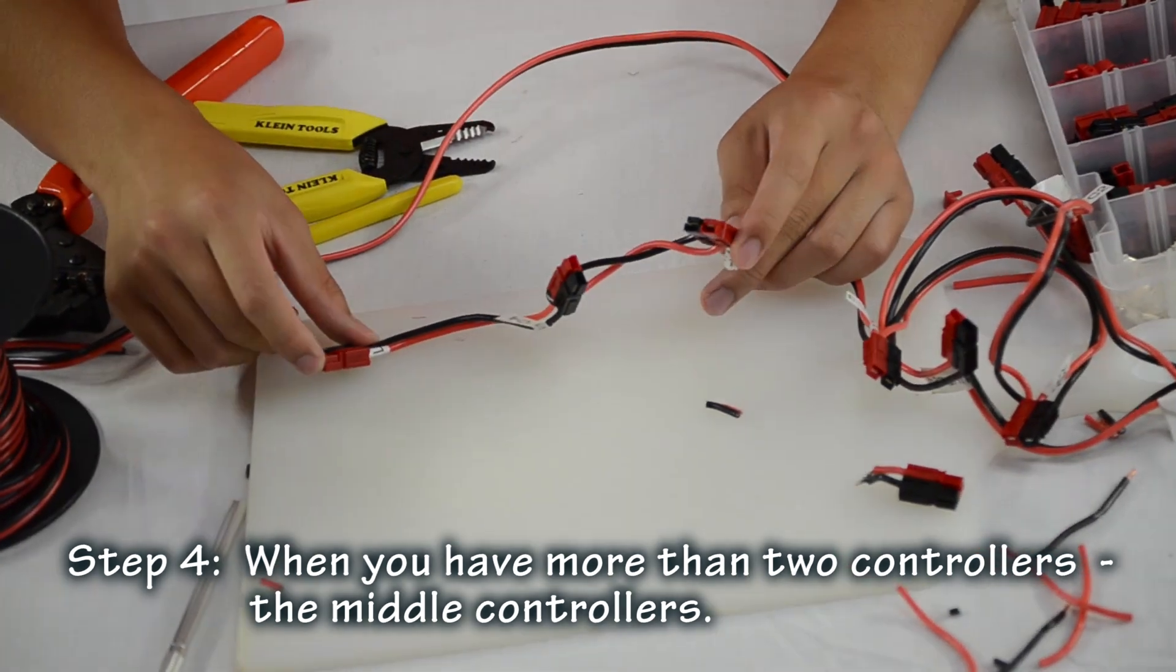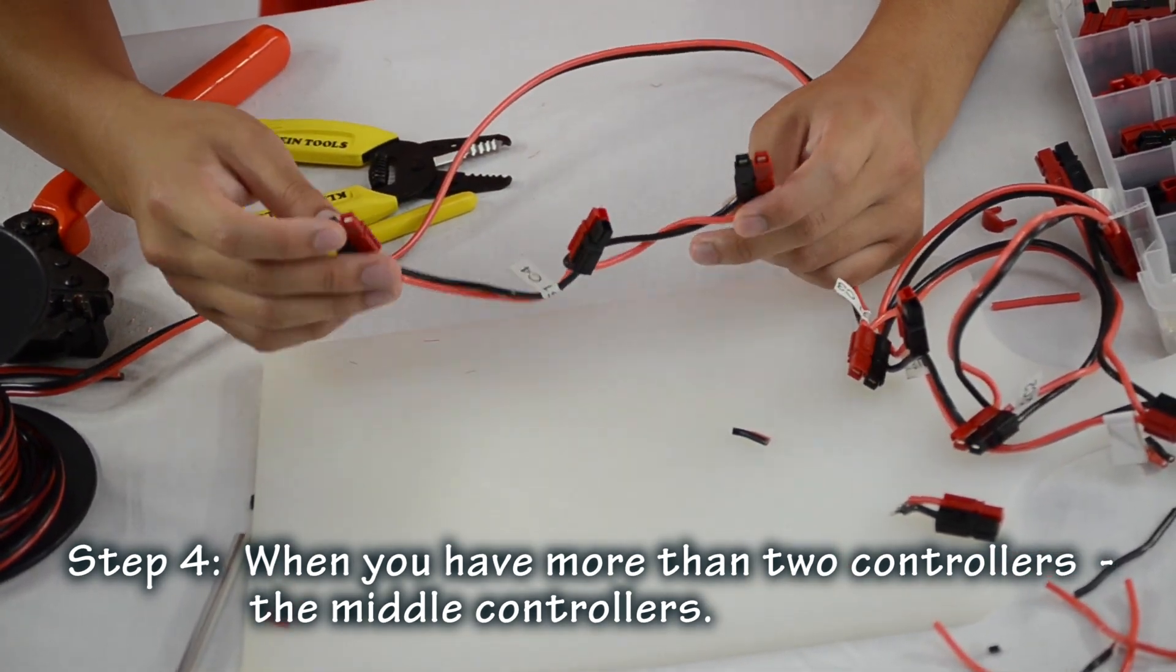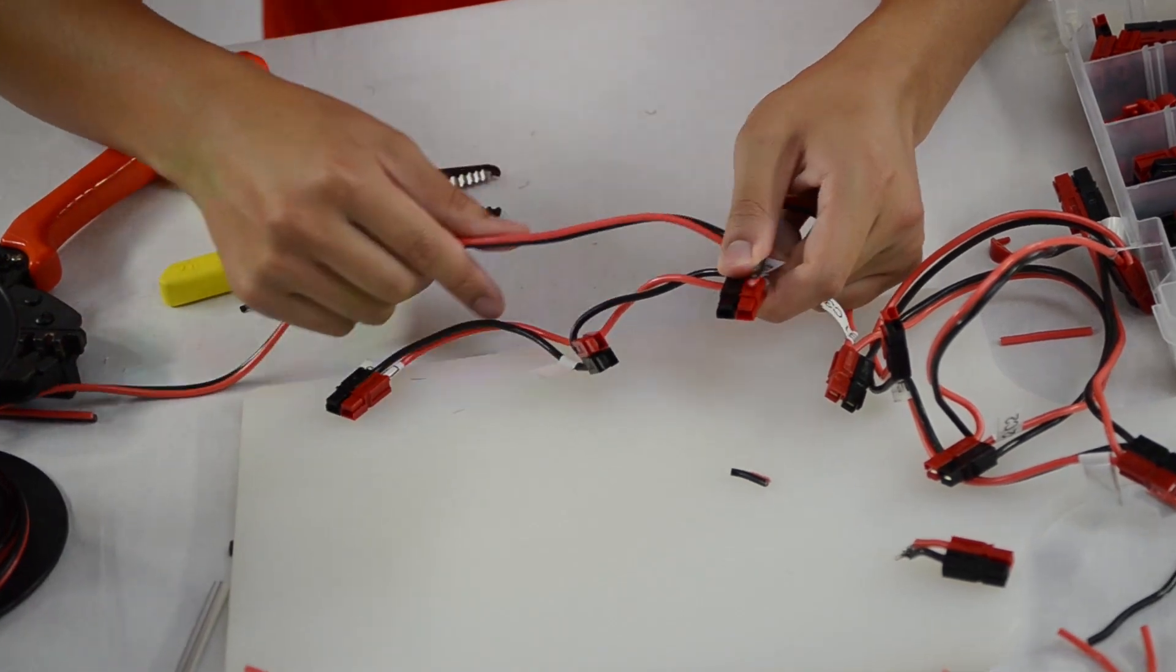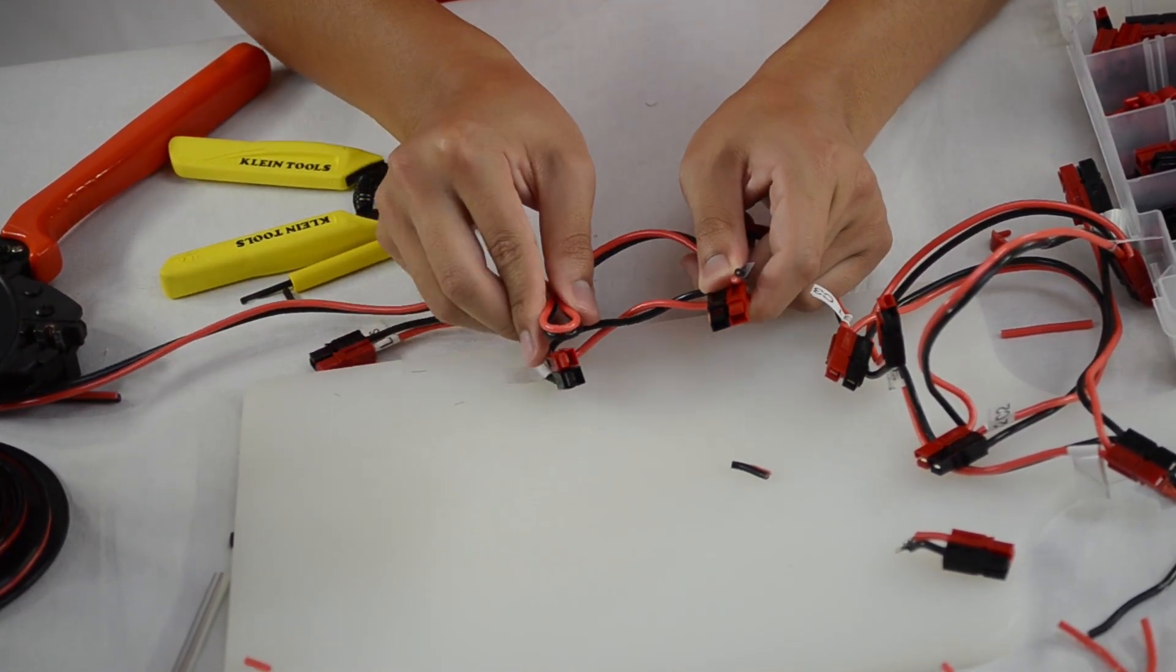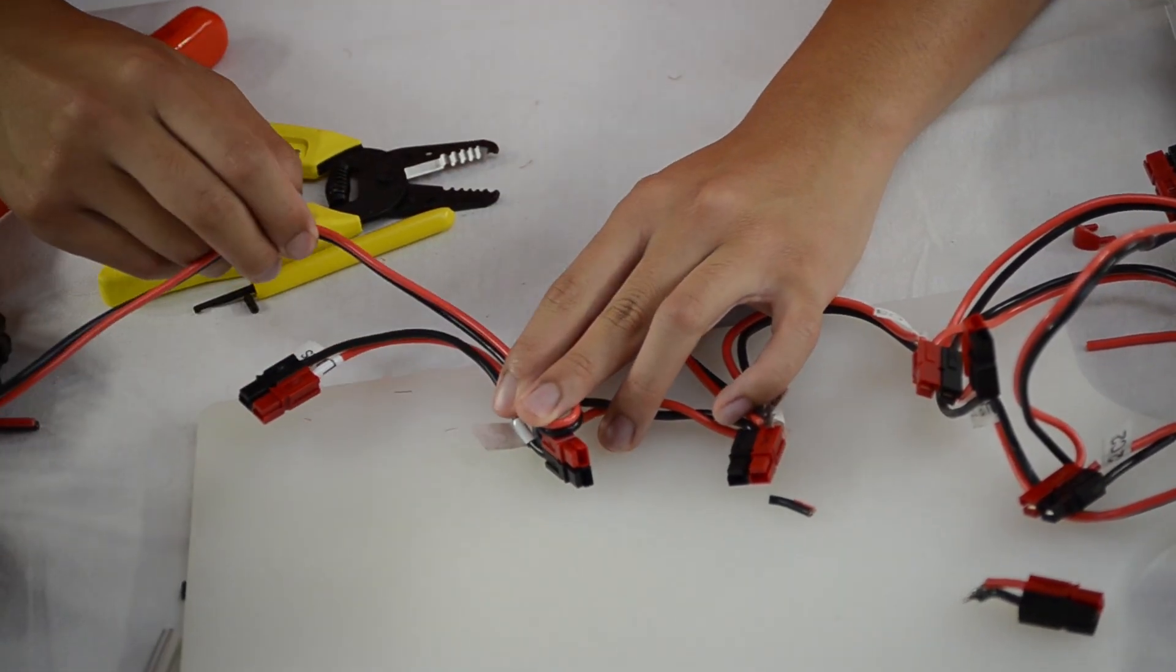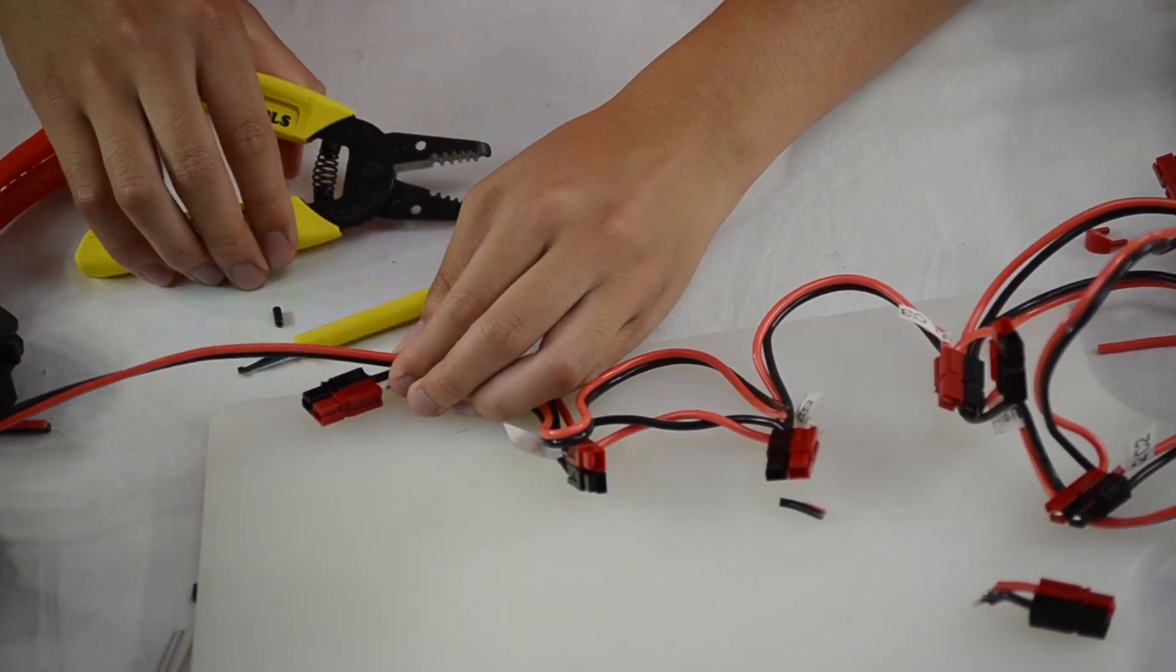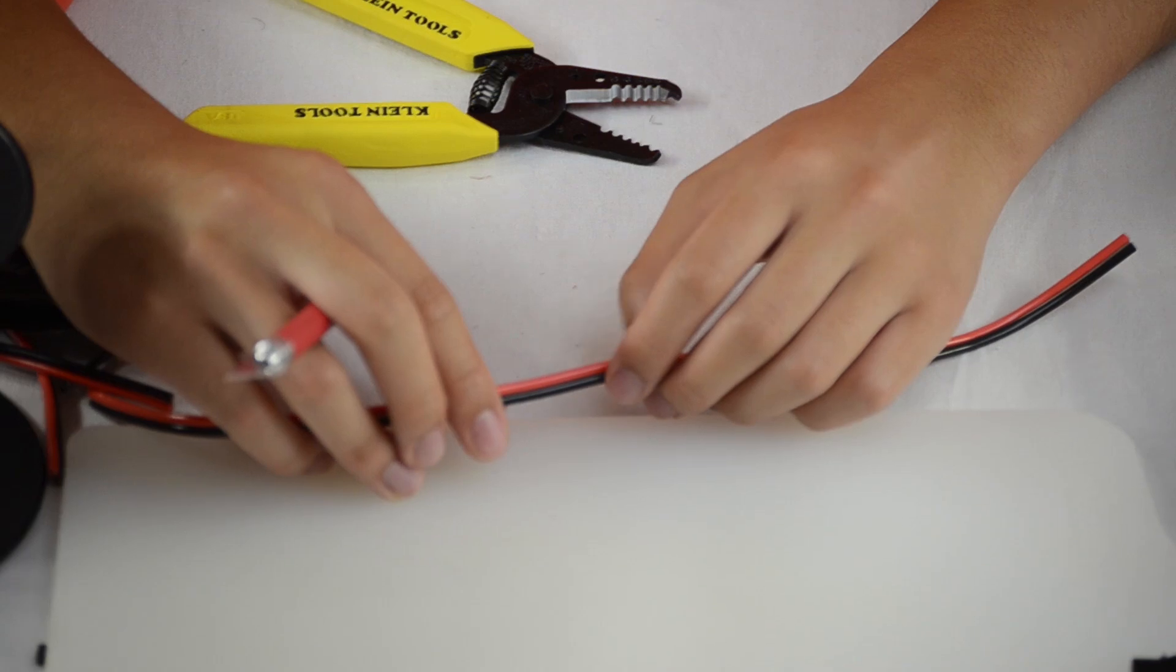All right, what we're going to do now is go over what to do in the case when you have more than two controllers. So let's say in this example you have three. What you're going to do is you're going to start with the initial controller, and then you're going to measure out to the second controller. When you get to the second controller, you're going to bend the wire in so that you have enough room to maneuver. And then once you get to the second controller, keep on doing this for every other controller you get to. But then when you get to the last controller, just have it measured out to the last controller, and then just cut it like we did in the one where you only had two controllers.